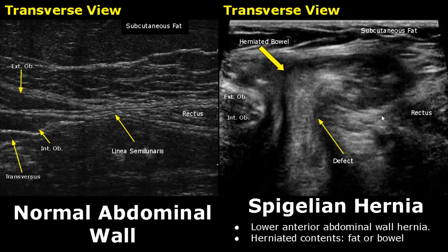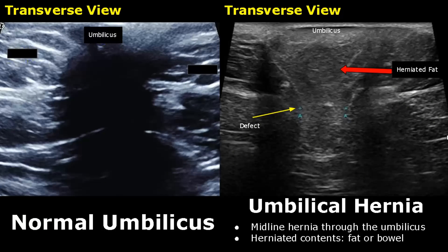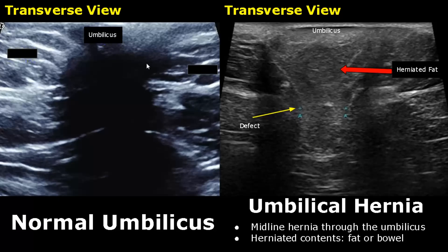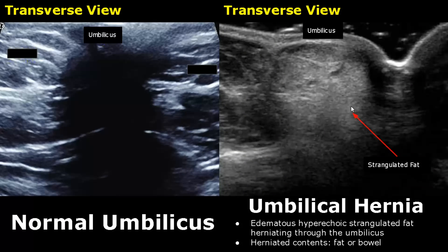When imaging a normal umbilicus, we will see posterior shadowing in this area because the umbilical ring is very dense. But in an umbilical hernia, the herniated contents protrude through the umbilicus, so much of the shadowing is eliminated. Here we can see herniated fat and only a little bit of shadowing in this umbilical hernia.